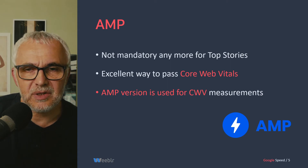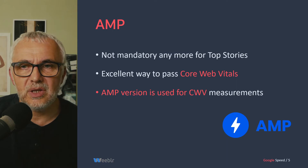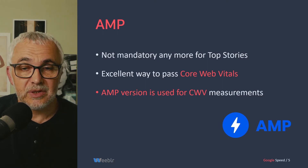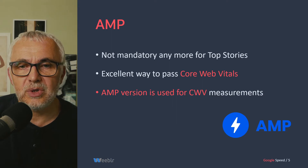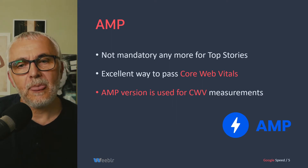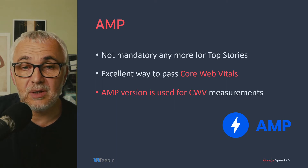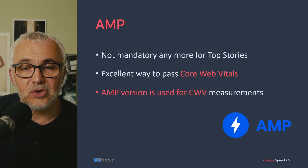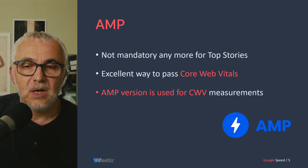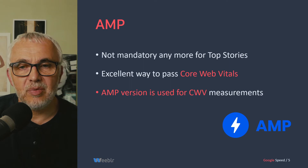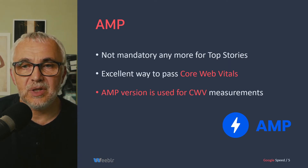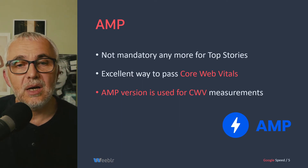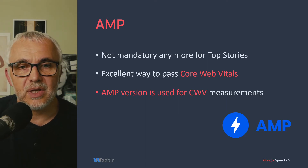I just want to say a word about AMP because something is changing about AMP due to this update. As of a few days ago, AMP is not mandatory anymore to be included in top stories in Google search results. That said, AMP as an HTML framework is still a very good way to pass the Core Web Vitals and achieve good grades on the speed measurements. It's also important to note that for websites which use AMP, it's the AMP page that will be used to evaluate their speed and grades. So there might be a good advantage there, but again, it's not mandatory anymore to be included in top stories.